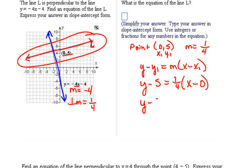So now we have y minus 5 equals, when we distribute this out, 1 fourth times x is 1 fourth x, and 1 fourth times 0 is 0. So we don't have to worry about that one.